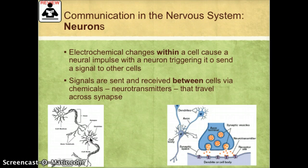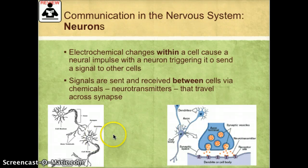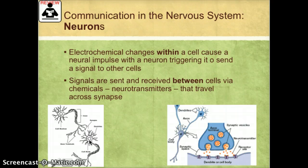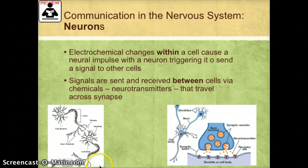At rest, the cell has a negative charge. When enough positive ions from outside the cell body flow in, the electrical charge inside the cell changes from negative to positive, which is what triggers an electrical impulse within the cell. This electrical impulse travels down the axon to the terminal buttons, where it then triggers the release of neurotransmitters.